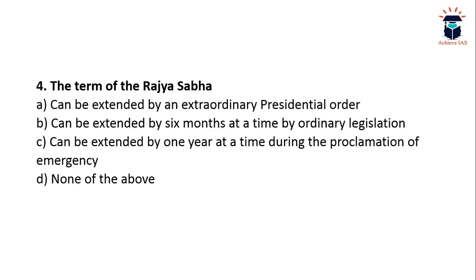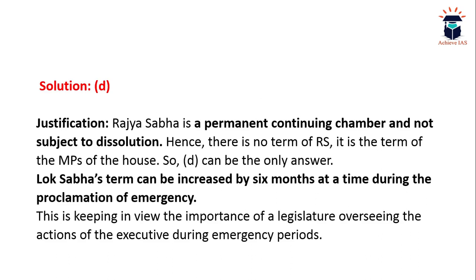Next question: the term of Rajya Sabha — can it be extended by an extraordinary presidential order; extended by six months at a time by ordinary legislation; extended by one year at a time during proclamation of emergency; or none of the above? The answer is D — none of the above. Rajya Sabha is a permanent house, so there is no question of extending its term — it has no term, it remains permanently. It is the term of the MPs of the house, not of the Rajya Sabha itself. Lok Sabha's term can be increased by six months at a time during a proclamation of emergency, keeping in view the importance of the legislature overseeing the actions of the executive during the emergency period.